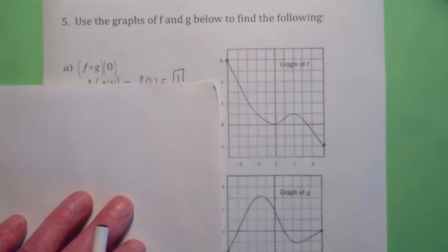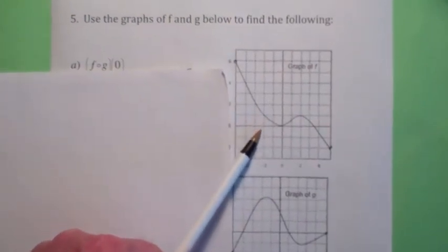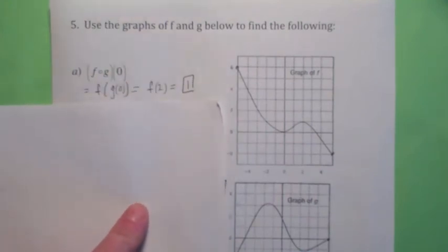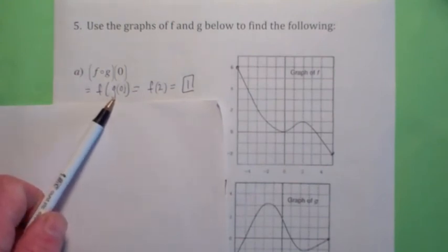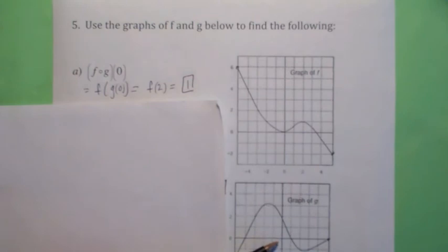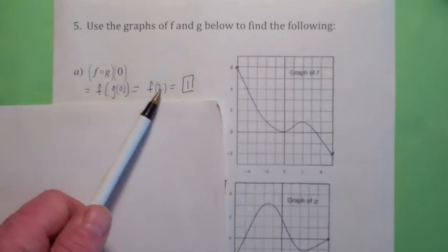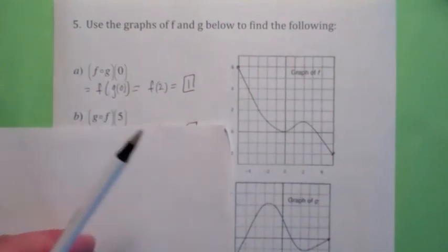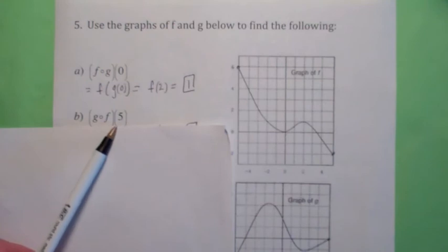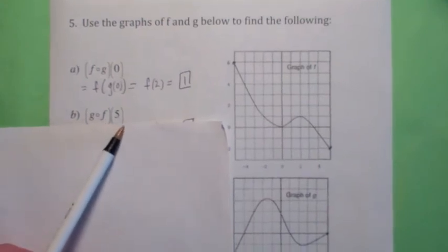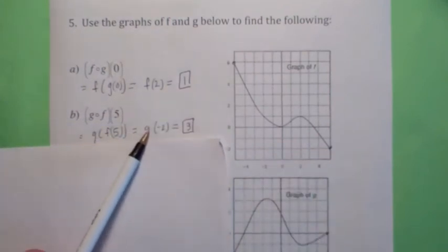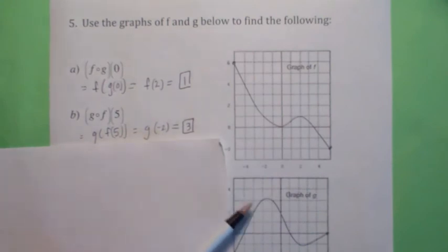A fraction is undefined whenever the denominator is 0. Now suppose we have two functions given as graphs. Using the graph to compute f circle g of 0, which means f of g of 0: first compute g of 0, which is 2, then compute f of 2, which is about 1. Let's try another one — compute g circle f of 5, which means g of f of 5. First compute f of 5, which looks like negative 2. So g of f of 5 is g of negative 2, which is about 3.